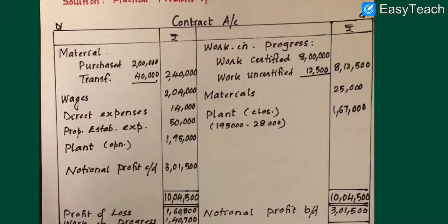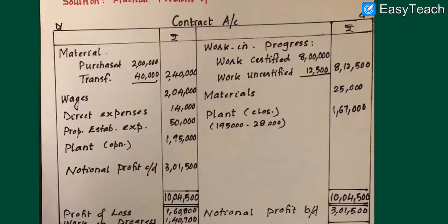Plant opening value on the debit side is 1 lakh 95,000. The closing date value of the plant is calculated as: opening value 1,95,000 minus depreciation 28,000, giving a closing value of 1 lakh 67,000. Material on the closing date: unconsumed material of 25,000 is entered on the credit side.